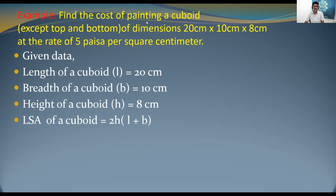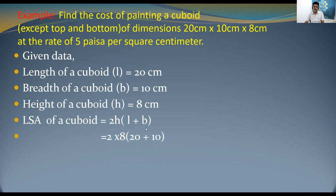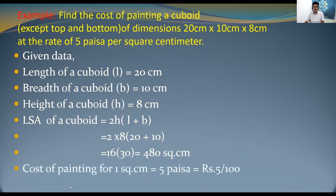Since we have to paint except the top and bottom, we use the lateral surface area formula: LSA = 2h(l + b). Substituting: 2 × 8 × (20 + 10) = 16 × 30 = 480 square centimeters.